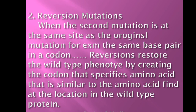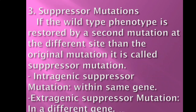Reversion mutation occurs when a second mutation is at the same site as the original mutation — for example, the same base pair in a codon. Reversions restore the wild type phenotype by creating a codon that specifies an amino acid similar to the one present in the wild type protein. Suppressor mutations occur when the wild type phenotype is restored by a second mutation at a different site from the original mutation. Suppressor mutations can be intragenic — occurring within the same gene — or extragenic — occurring in a different gene.